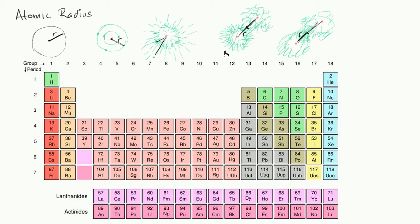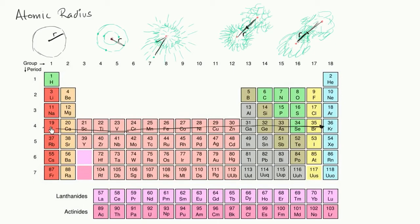With that out of the way, let's think about what the trends for atomic size or atomic radii would be in the periodic table. The first thing to think about is: what would be the trend for atomic radii as we move through a period? Let's say we're in the fourth period and we go from potassium to krypton. When you're in the fourth period, the outermost electrons are going to be in your fourth shell.